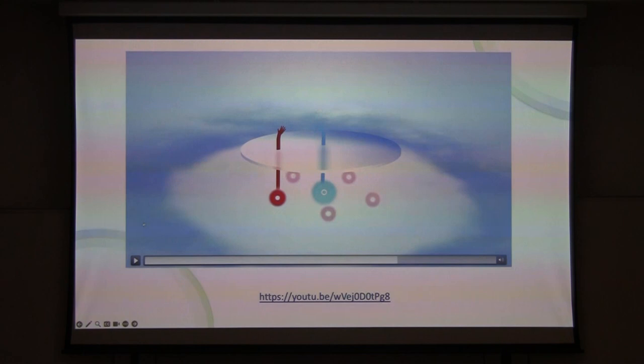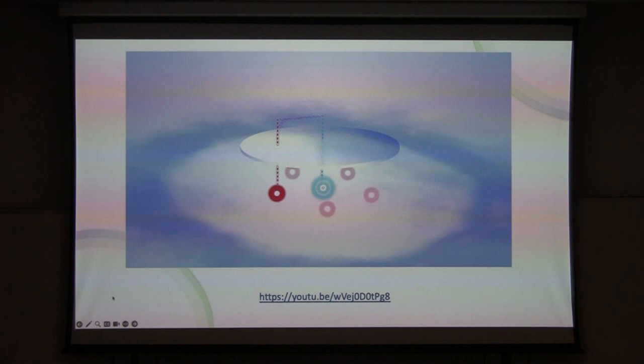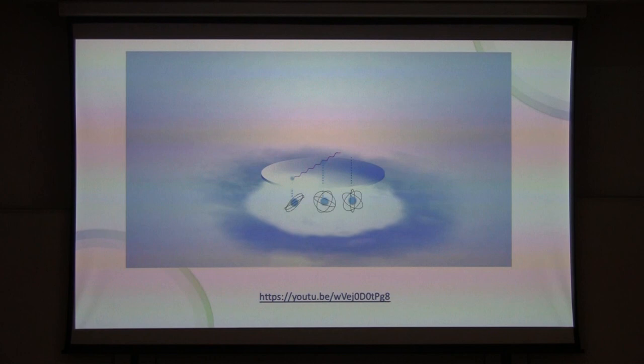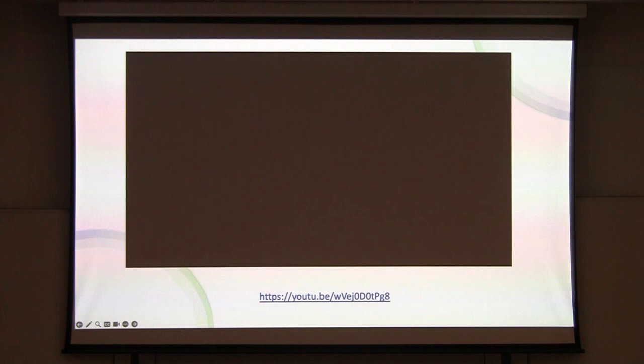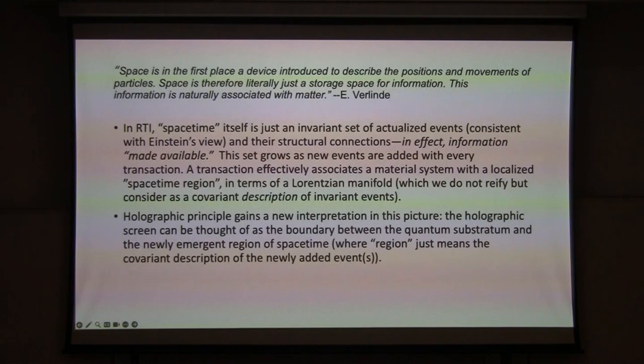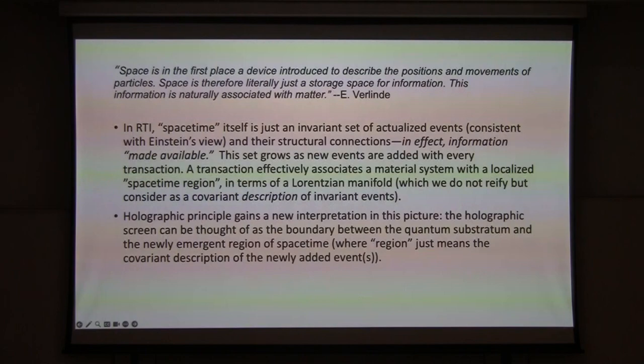One absorber shakes hands with the emitter, meaning that absorber receives the photon. These real handshakes, or actualized transactions, establish the elements of time and space. Space-time is created from the possibilities of quantum lab. In this picture, the quantum level does have entropy, and the entropy quantifies those possibilities. So when we have space-time emergence, we effectively have a reduction of entropy that comes with an entropy cost.